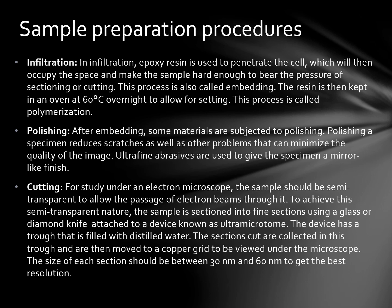Polishing is then performed. We need the sample to be completely uniformly flat. After embedding, some materials are subjected to polishing, which reduces scratches and other defects, helping remove anything that can minimise the quality of the image. Ultrafine abrasives are used to give the specimen a mirror-like finish.